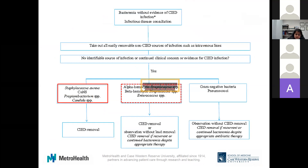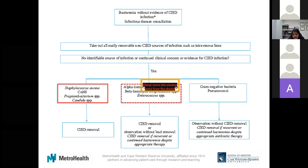With unexplained bacteremia, first eliminate other sources: treat UTIs, remove Foley catheters, central lines, and dialysis catheters. If no identifiable source remains, consider the microbe. Coagulase-negative staph, staph aureus, Propionibacterium, and Candida all require device removal. Streptococcal or enterococcal infection: removal can be considered or antibiotic treatment with removal if bacteremia persists. Gram-negative bacteria or pneumococci: usually treat with antimicrobial therapy, and reevaluate for clearance — device removal not typically required.